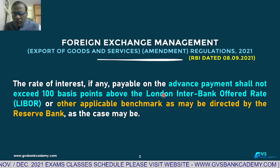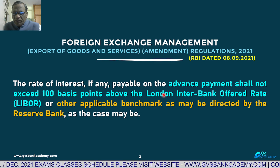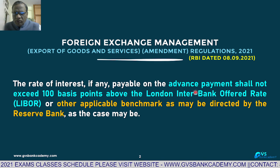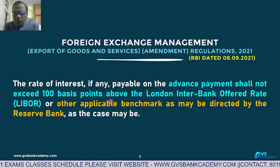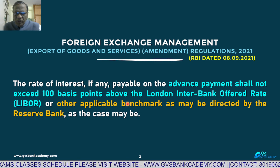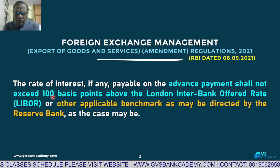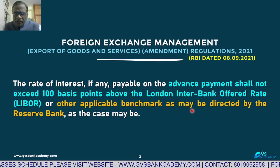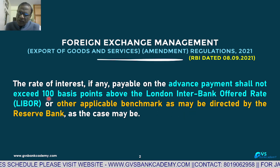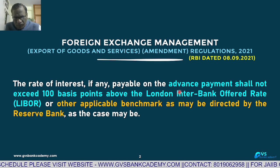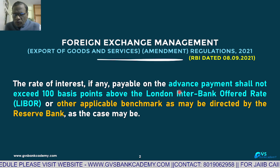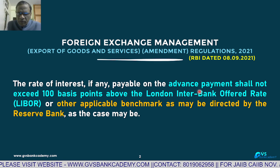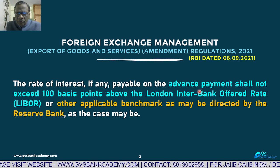Whenever the exporter is getting advance remittance towards exports, on that advance payment amount, the exporter is allowed to pay only LIBOR plus 100 basis points, or any other applicable benchmark rate plus 100 basis points. If the exporter wants to pay interest on the advance payment received from the importer, this is the key point.